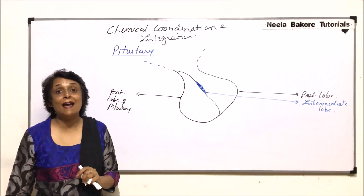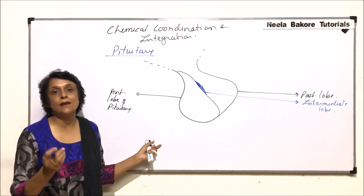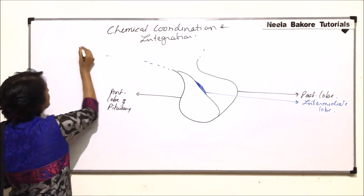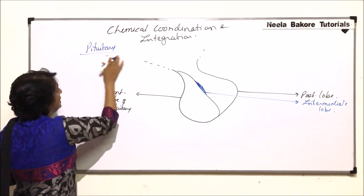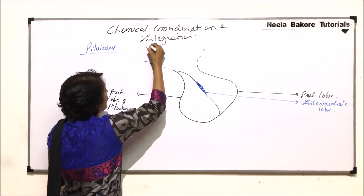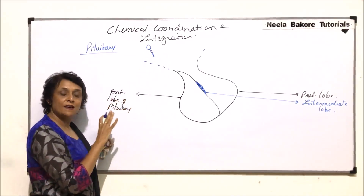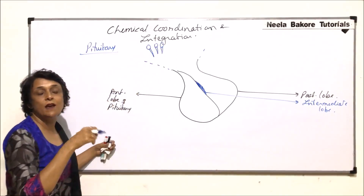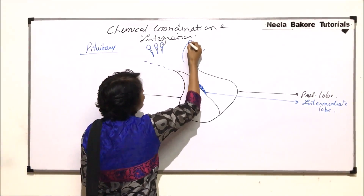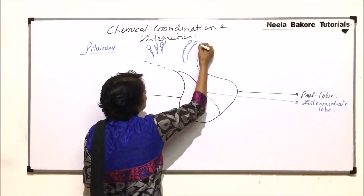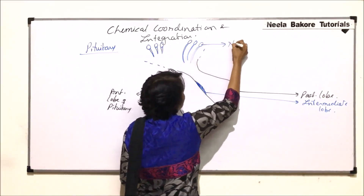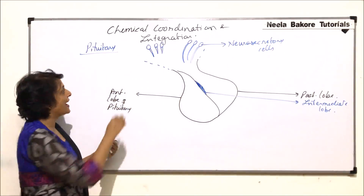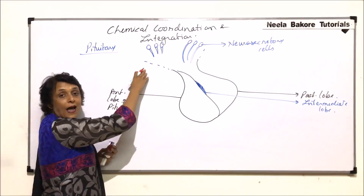This upper part here is the hypothalamus region. In the hypothalamus region there are neurosecretory cells, and these neurosecretory cells are nothing but neurons. We will show these neurons here — these are the neurosecretory cells, and the extensions drawn are the axon parts. Similarly, there are neurosecretory cells shown here in the hypothalamus region; the long processes of these cells are the axons.